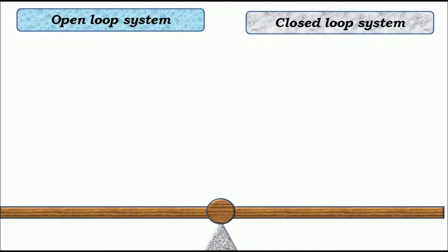Open loop system means output is dependent on input, but the controlling action is totally independent of the changes in output. Closed loop system means the controlling action is dependent on the changes in output.